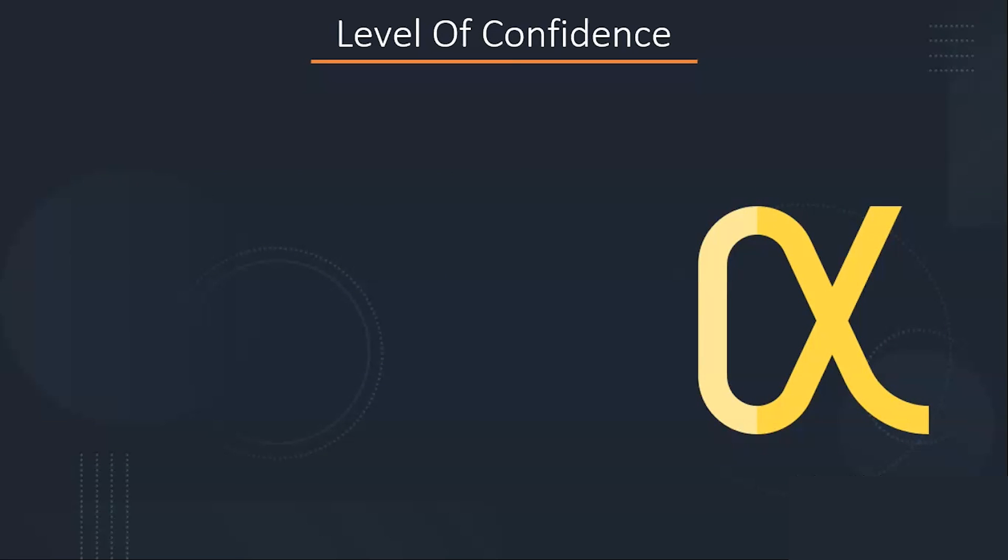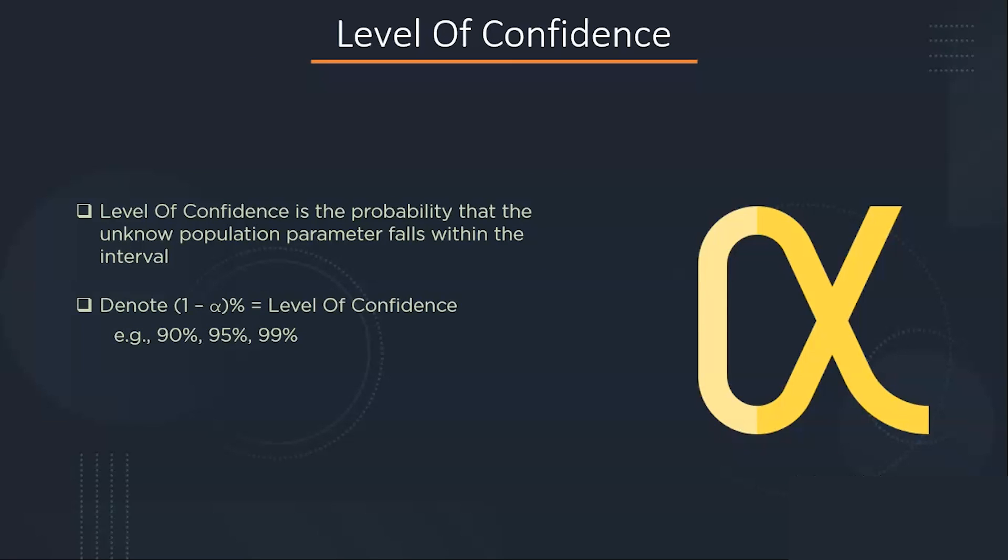Now, what is level of confidence? With respect to estimation problems, alpha refers to a likelihood that a true population parameter lies outside the confidence interval. The level of confidence is denoted by 1 minus alpha and it is usually 90%, 95% or 99%. Alpha is usually expressed as a proportion. So if the confidence level is 95%, then alpha will be equal to 1 minus 0.95, that is 0.05. Now let's move on to discuss what this confidence level means.